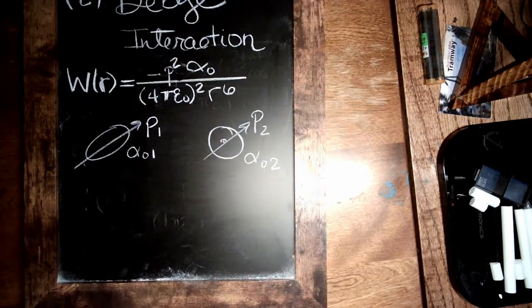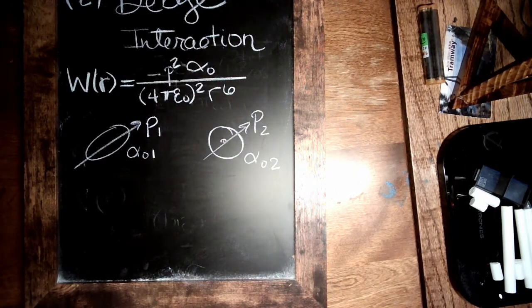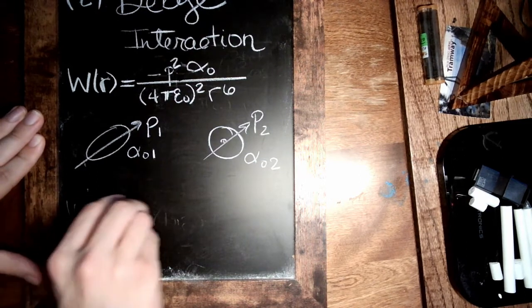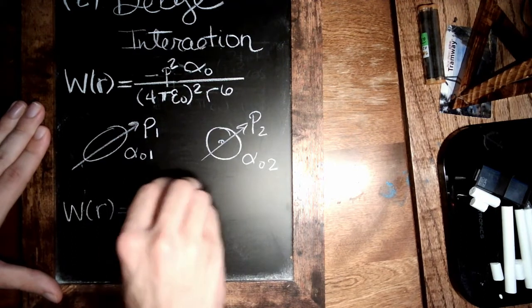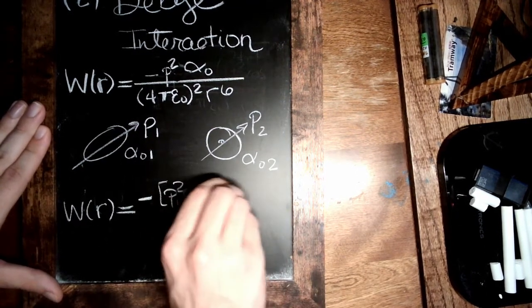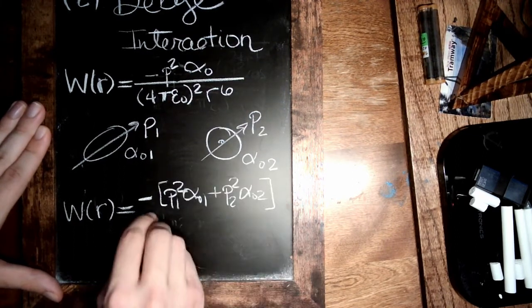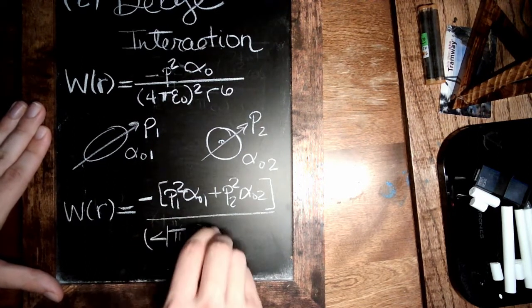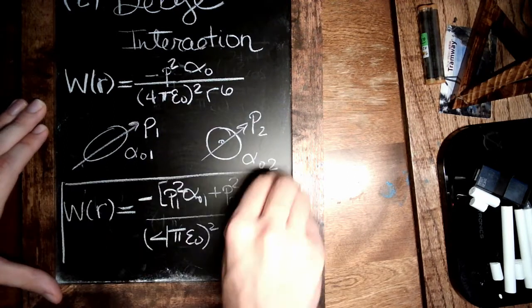So with that, we can basically just expand our result from above to have a better estimate of the Debye energy. Just a little bit more general is P1 squared alpha zero one plus P2 squared alpha zero two divided by the same factor. And perhaps this is more deserving of the box.